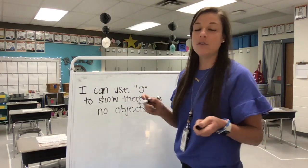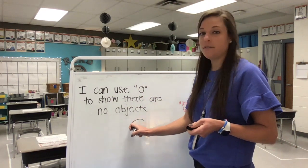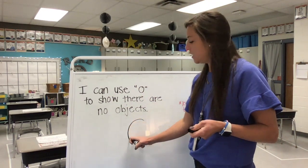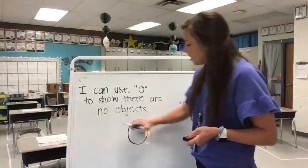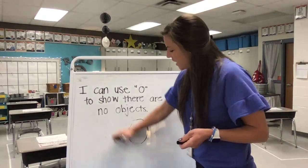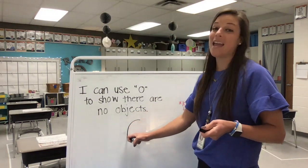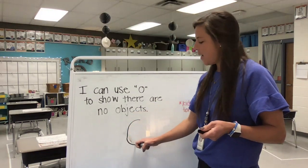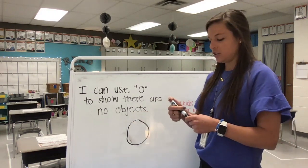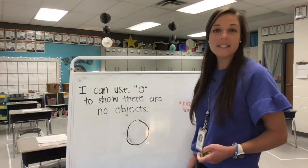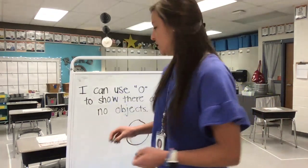And when we say our zero rhyme, we say: down to the left to find my hero, back to the top, I've made my zero. And that is our zero. We'll practice that number rhyme as we practice making that number together. Today, we're just going to be counting and showing how many.